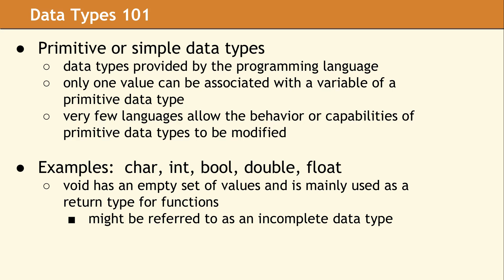There is an odd quasi-type called void. Void has an empty set of values, and it is mainly used as a return type for functions. In some contexts, it can be used as a data type, but it's not legal in all contexts where a data type would make sense. So sometimes void is referred to as an incomplete data type.